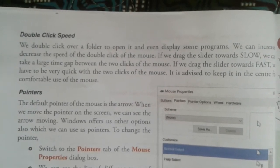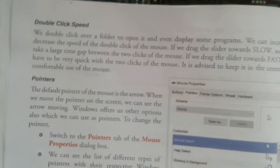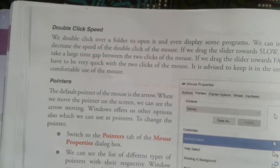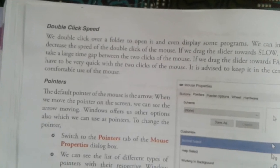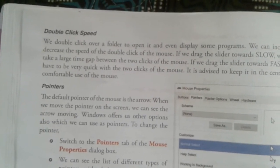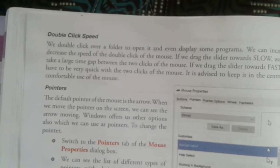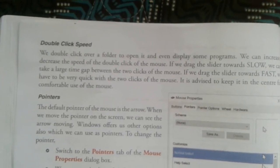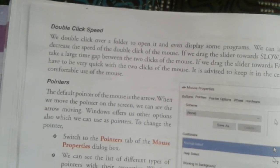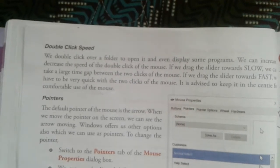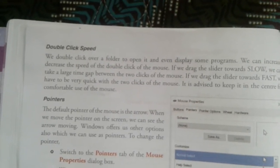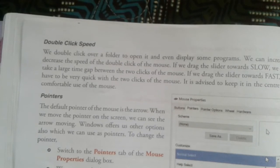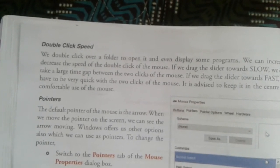Double-click speed: we double-click over a folder to open it and to display some programs. We can increase or decrease the speed of the double-click of the mouse. If we drag the slider towards Slow, we can take a large time gap between the two clicks. If we drag the slider towards Fast, we have to be very quick with the two clicks. It is advised to keep it in the center for comfortable use of the mouse.